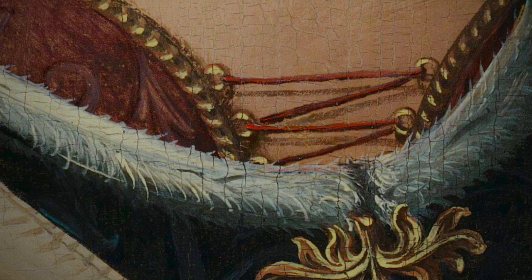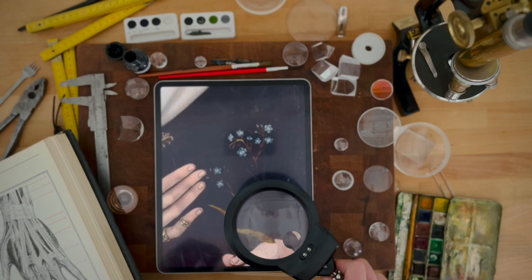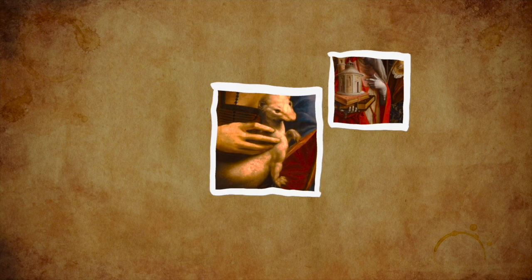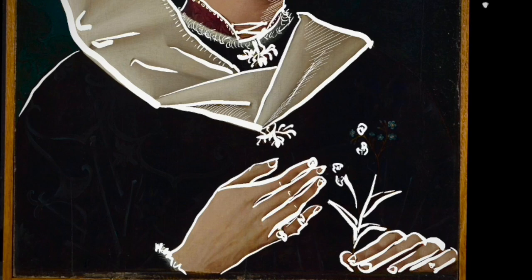Another clue lies in her hands: a delicate sprig of blue and white forget-me-nots. In portraiture, objects held by the sitter often provide significant hints about the painting's purpose, the sitter's identity, or even their profession. During this period, forget-me-nots symbolize love. Could this portrait commemorate an engagement or marriage, capturing a token of everlasting affection?